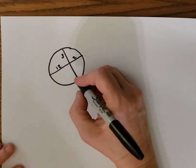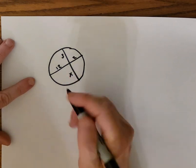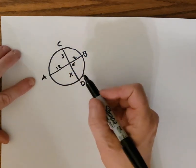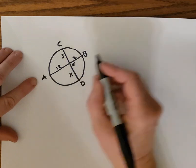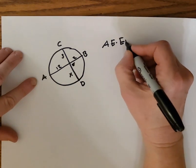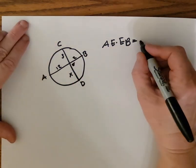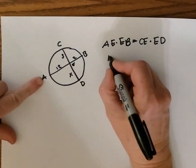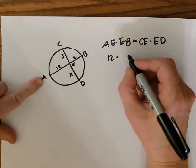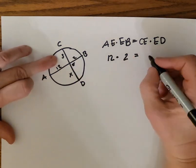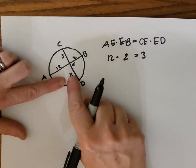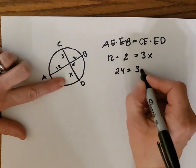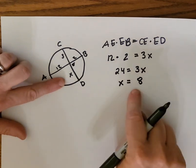How can we find x? We have two intersecting chords, so AE times EB equals CE times ED. AE is 12, multiplied by EB which is 2, must equal CE which is 3, multiplied by x — we're trying to find ED. So 12 times 2 is 24, giving us 24 equals 3x, therefore x equals 8. That's how you figure that one out.